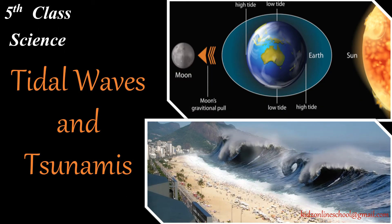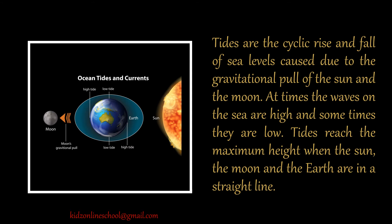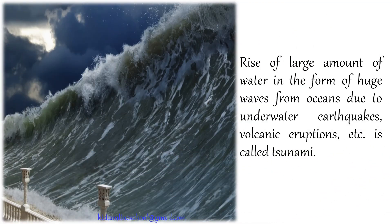About Tidal Waves and Tsunamis. Tides are the cyclic rise and fall of sea levels caused due to the gravitational pull of the sun and the moon. At times the waves on the sea are high and sometimes they are low. Tides reach the maximum height when the sun, the moon and the earth are in a straight line. The rise of large amounts of water in the form of huge waves from oceans due to underwater earthquakes, volcanic eruptions, etc. is called a Tsunami.